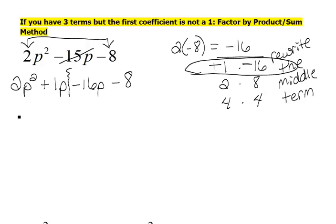The first two terms have a p in common. So when I factor that p out, we're left with 2p plus 1. Remember, that's like a reverse distribution.